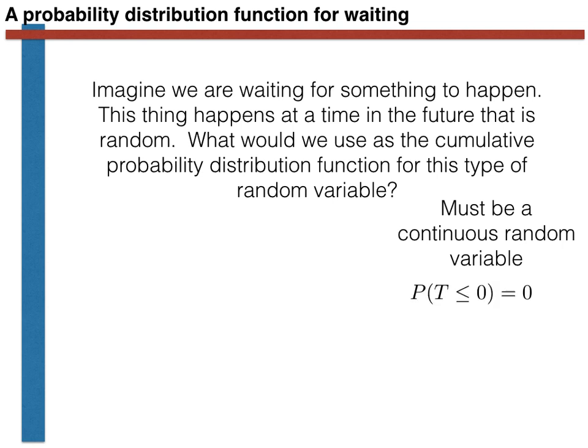The second thing that is obvious is that the probability that capital T is less than or equal to zero must be zero, as if T were negative, the event would have happened before we started waiting, which would mean that we wouldn't have to wait for it.